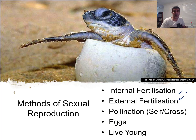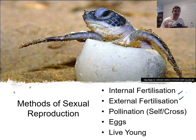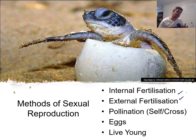Other sexual reproduction strategies include pollination, employed by angiosperms — flowering plants — which can be either self-pollination or cross-pollination, as well as the production of eggs and live young. We haven't even talked about things like parental care. We're going to look at each of these different strategies, both asexual and sexual, in future videos. This was just an introduction to the different types of ways that organisms reproduce. Thanks for watching.